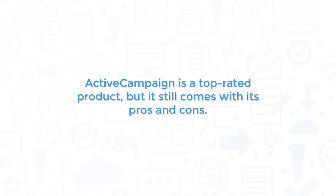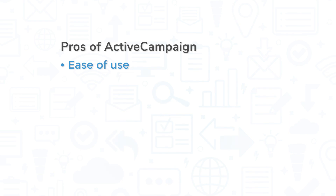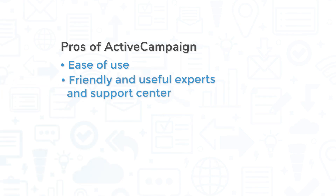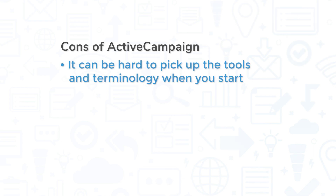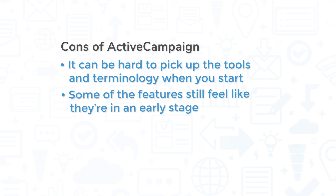ActiveCampaign is a top-rated product, but it still comes with its pros and cons. One of the strongest pros is the ease of use, specifically the drag-and-drop automation platform. Another pro that is often commented on is how friendly and useful the ActiveCampaign experts and support center are. Because there's a lot you can do with this system, it can be hard to pick up on the tools and terminology when you start. That said, there are plenty of training videos available and the professional plan includes a dedicated onboarding specialist. Reviews state that some features still feel like they're in an early stage, citing the form builder and CRM functions in particular.